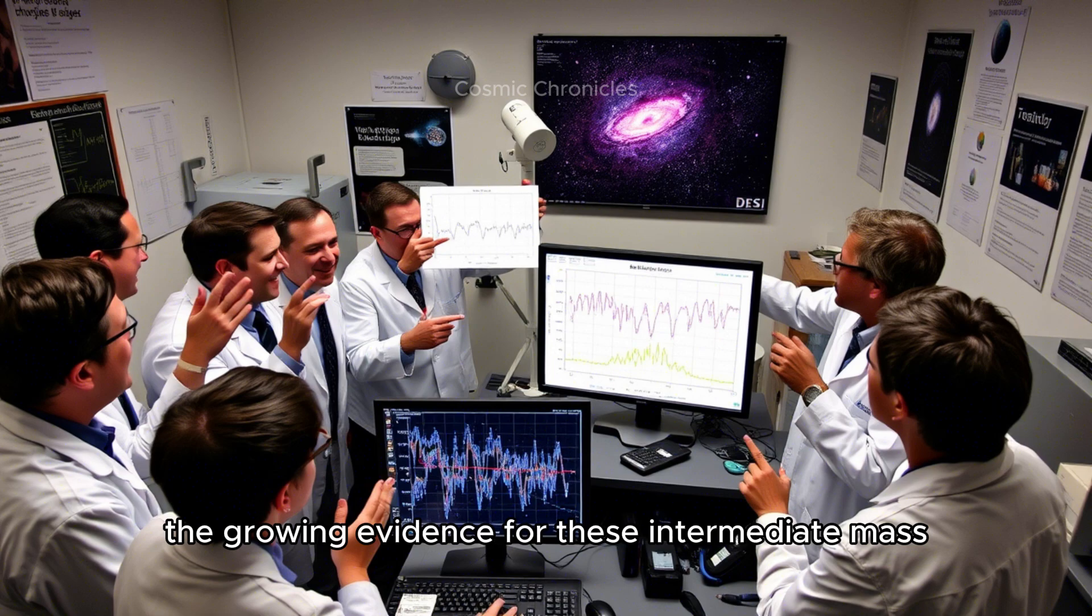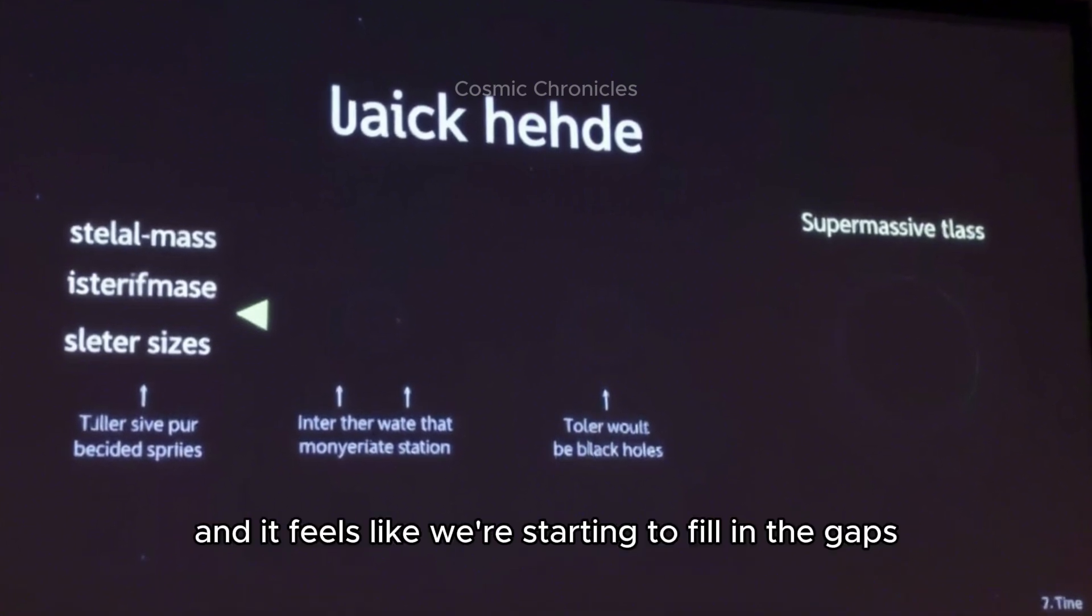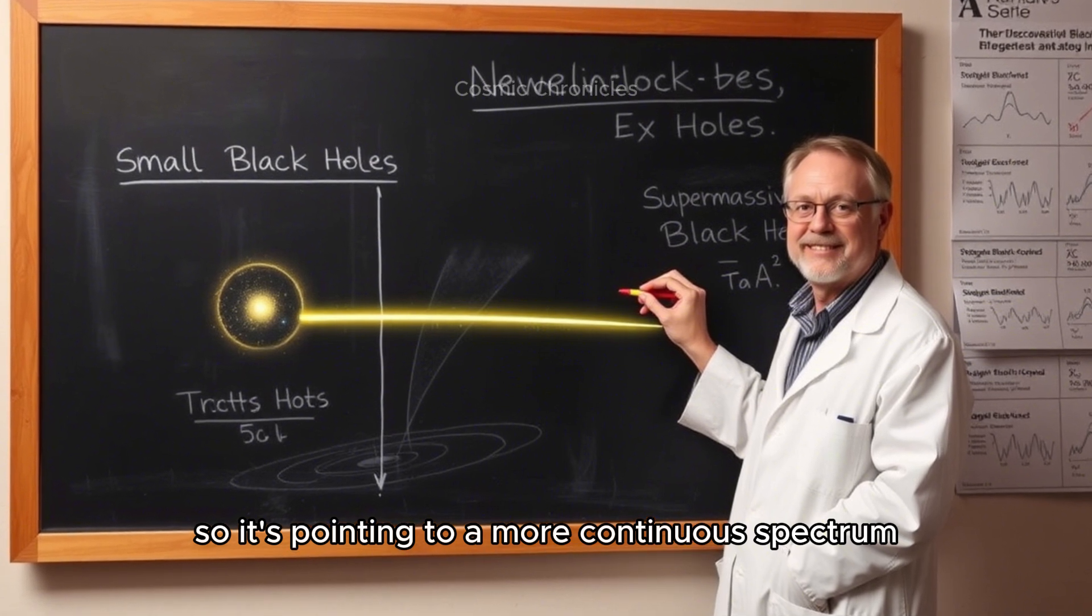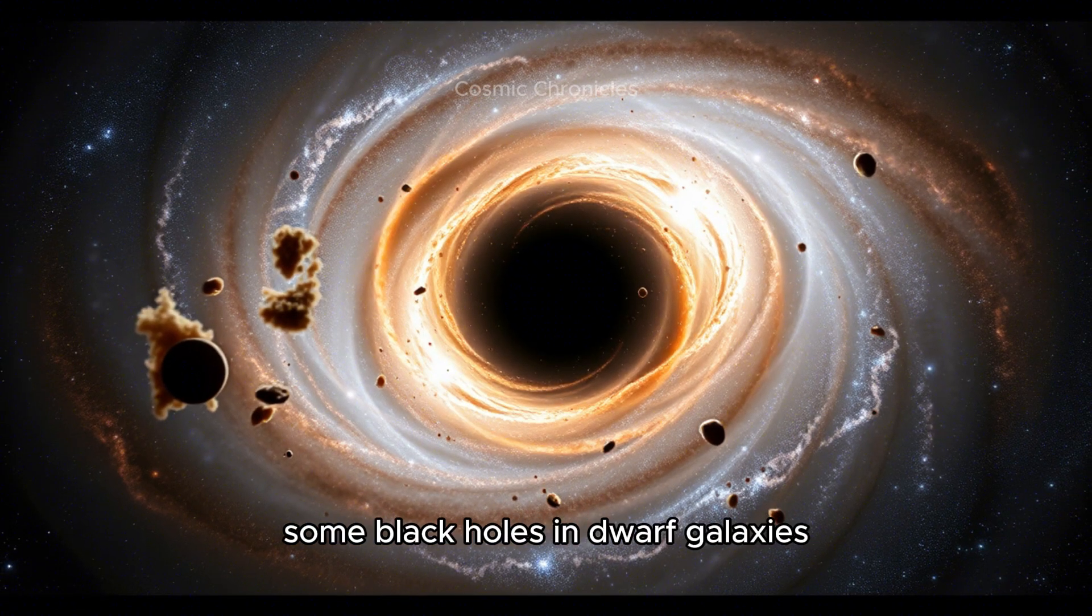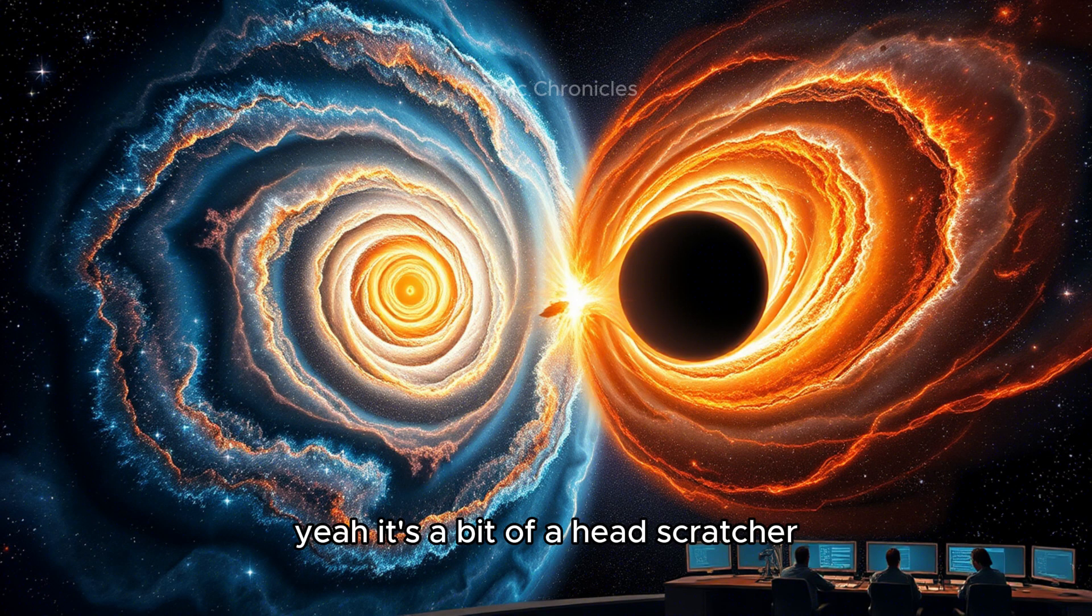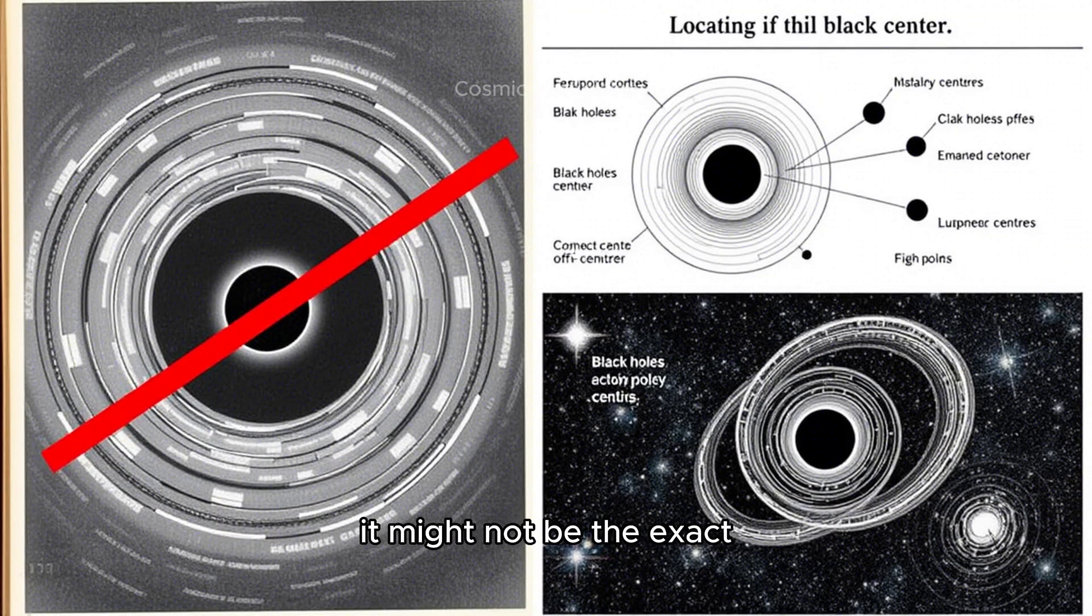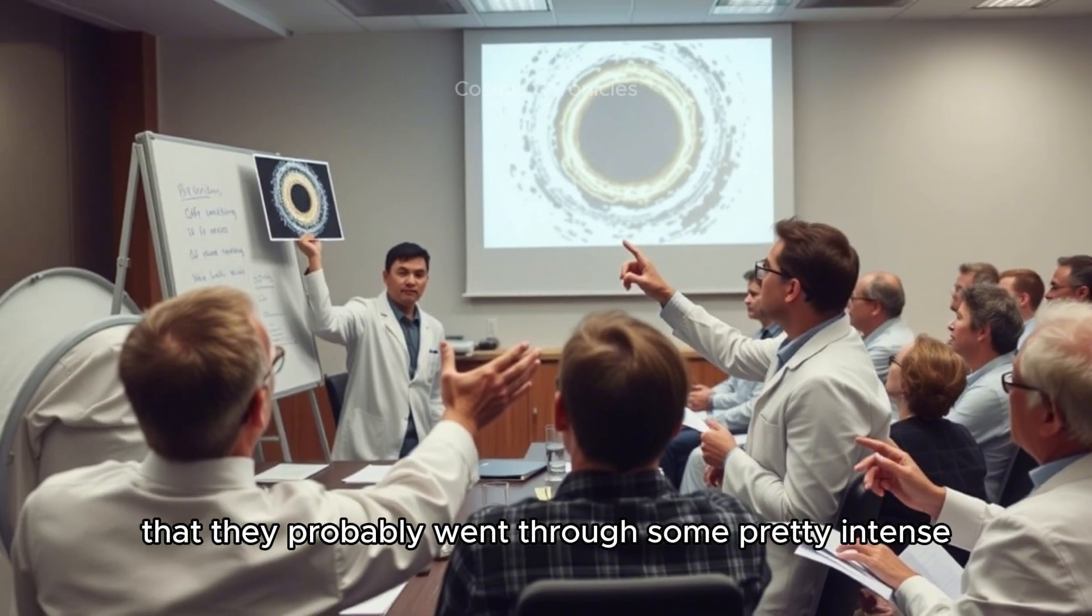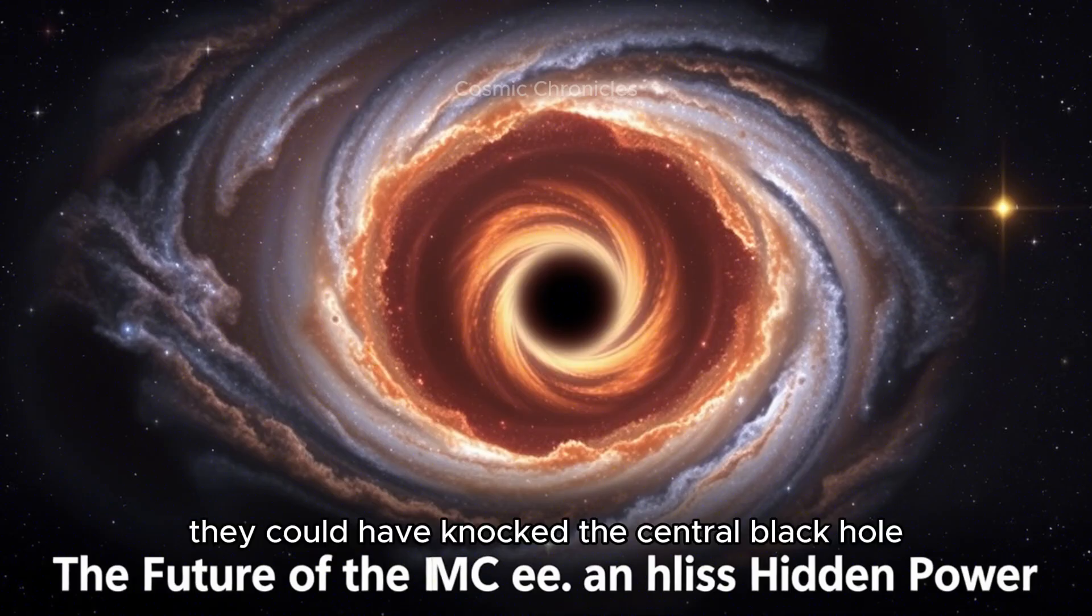There's also the growing evidence for intermediate mass black holes in dwarf galaxies, found using instruments like DSI. It feels like we're starting to fill in the gaps between the smaller stellar mass black holes, the kind that form from collapsing stars, and those giant supermassive ones. It's pointing to a more continuous spectrum of black hole sizes out there. Another weird detail is that some black holes in dwarf galaxies seem to be off-center, which is kind of counterintuitive. But it actually makes sense if you think about it - like if two small towns merge together, the original center of one town might not be the exact center of the combined area anymore. With galaxies, this off-center black hole suggests they probably went through some pretty intense gravitational interactions in their past.